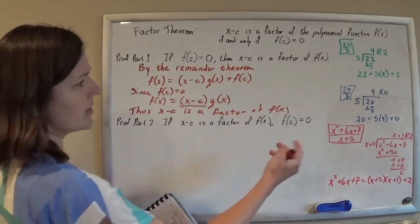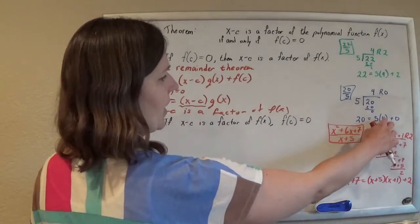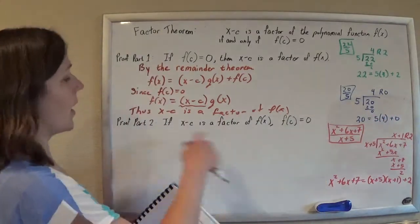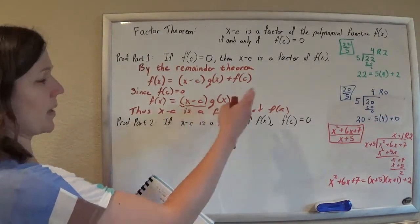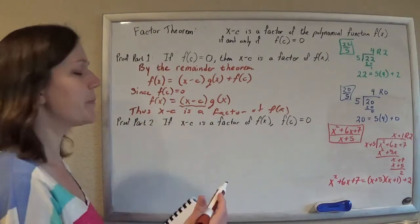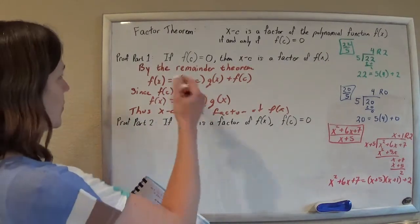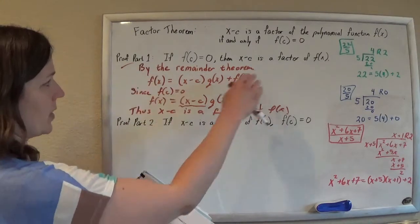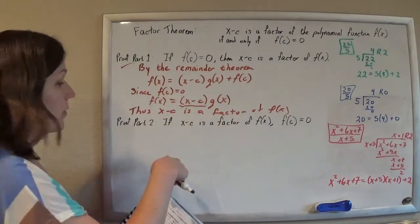Just like I could write 20 as 5 times 4 with no remainder, I can write f of x as x minus c times q of x with no remainder. Cool. So we proved the first part, the if part. Now we have to go the other way, in reverse.